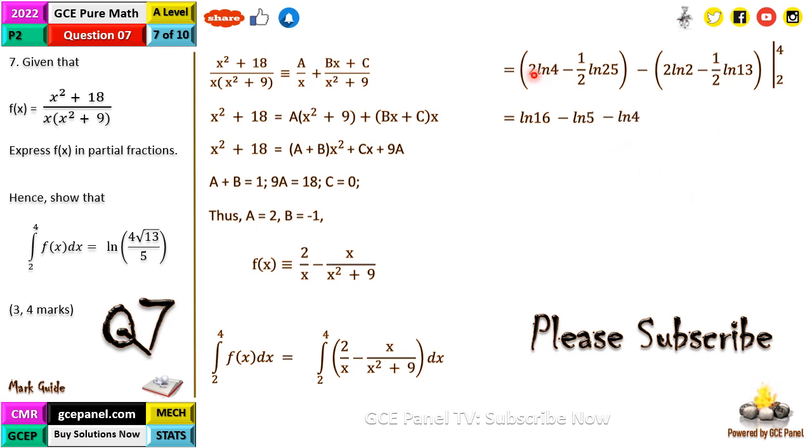This would be equal to ln 16 minus ln 5, because 2 ln 4 is the same as ln 16—we bring the 2 behind 4 to the power, which is 16. A half ln 25 is the same as the square root of 25, which is ln 5, minus 2 ln 2, so minus ln 4, then minus minus is plus, so this is going to give us a half ln 13, which is the square root of ln of the square root of 13. When it simplifies, you are going to have ln(16 times root 13 all that on 5 times 4), and this is going to give us ln(4√13/5) as required.